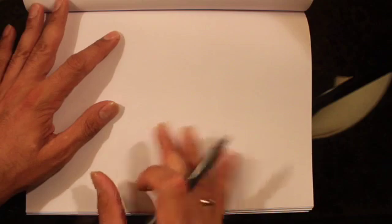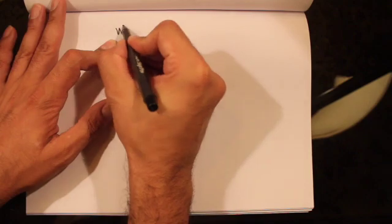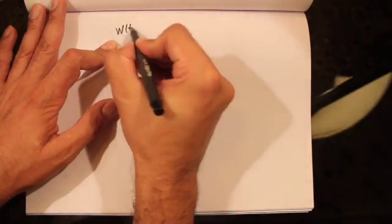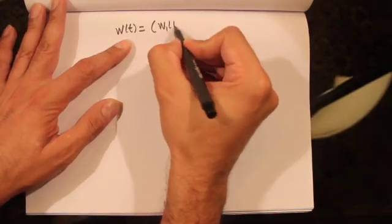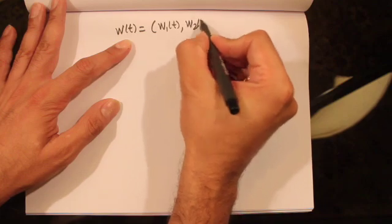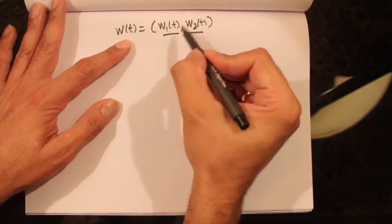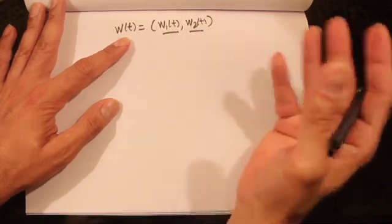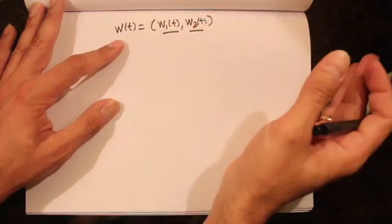For our discussion today, let's assume that we have a two-dimensional Brownian motion given by Wt, which is basically a vector of W1t and W2t, where W1t and W2t are single-dimensional Brownian motions and they are independent of one another.